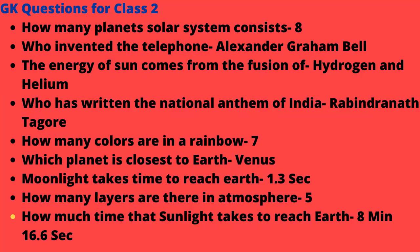Who has written the national anthem of India? Rabindranath Tagore. How many colors are in a rainbow? 7. Which planet is closest to Earth? Venus. How much time does moonlight take to reach Earth? 1.3 seconds.